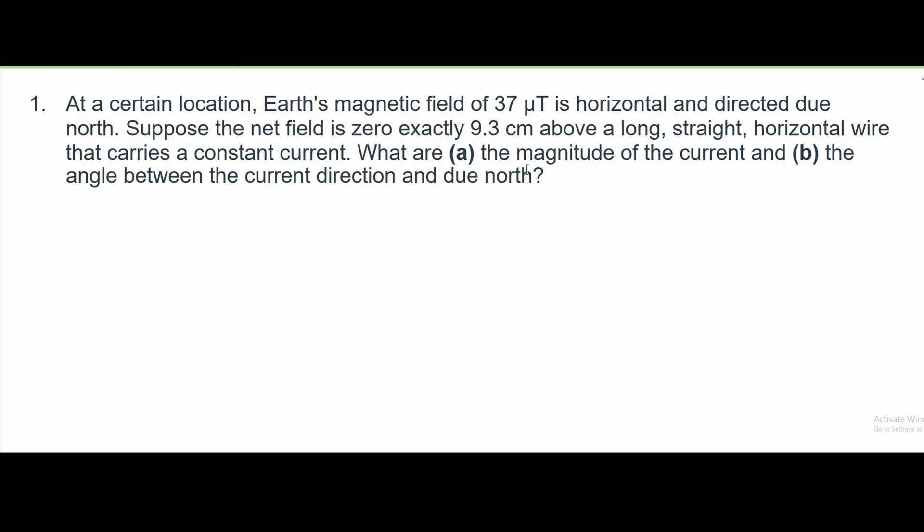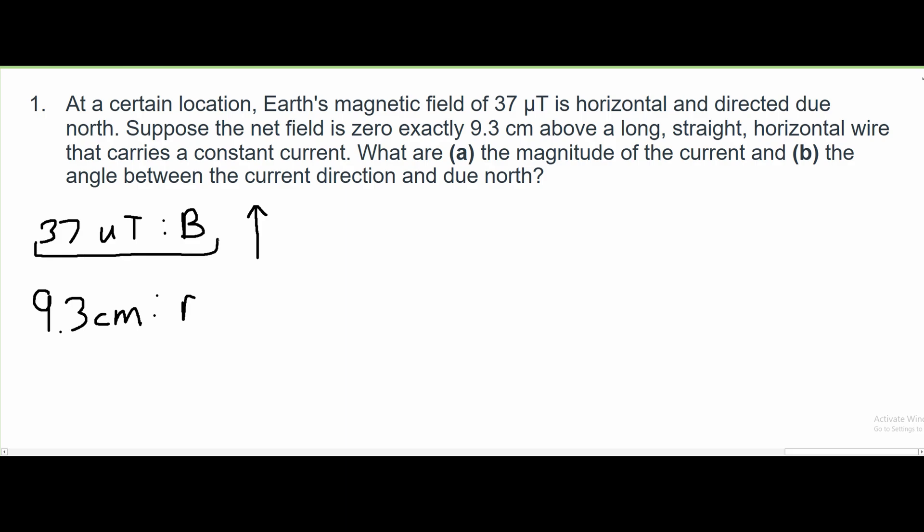What are the A, magnitude of the current, and B, angle between the current direction and due north? The values that we're given are 37 microteslas for our magnetic field and 9.3 centimeters for our distance.